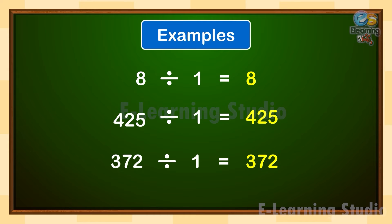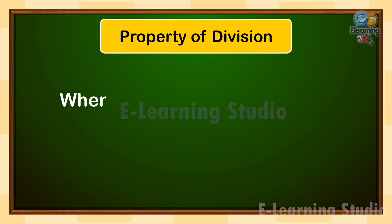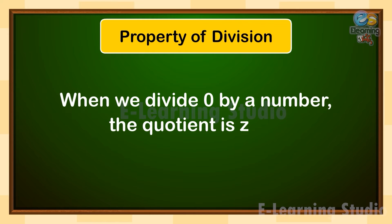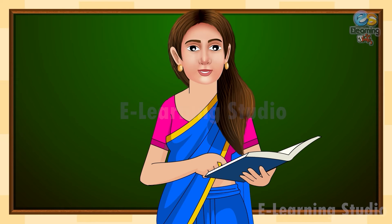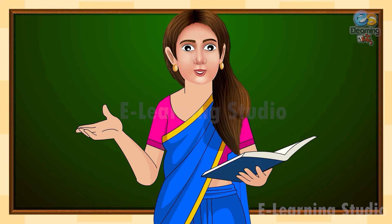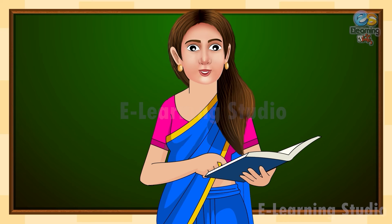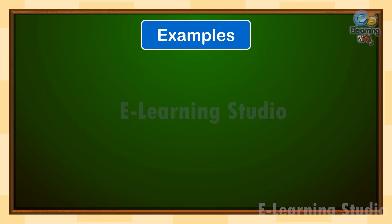In our next property, when we divide 0 by a number — except 0 — the quotient is 0. Let us understand with the help of some examples.